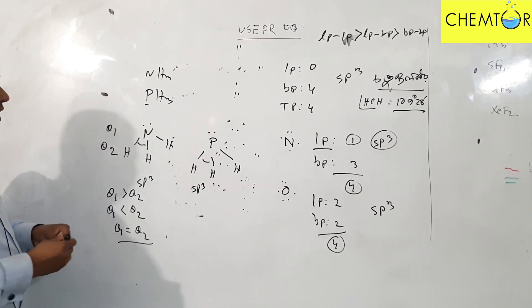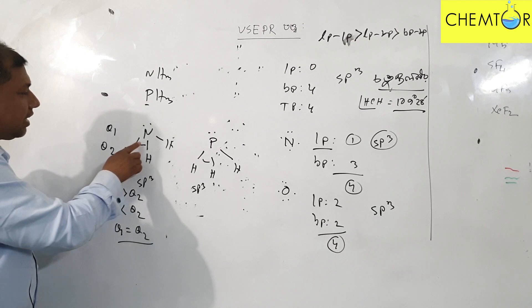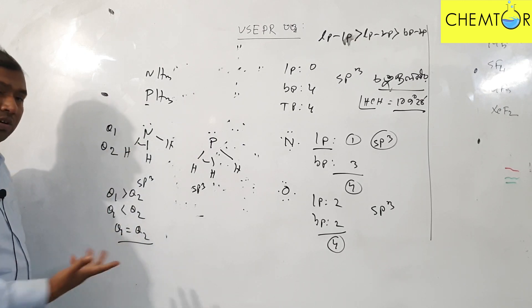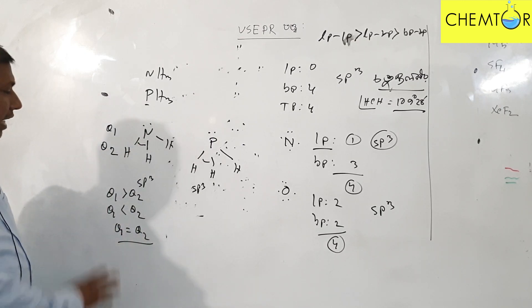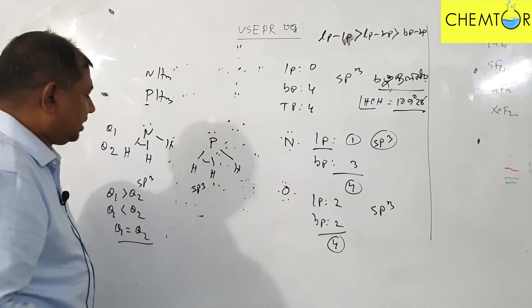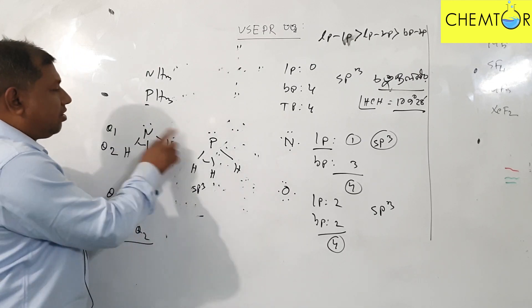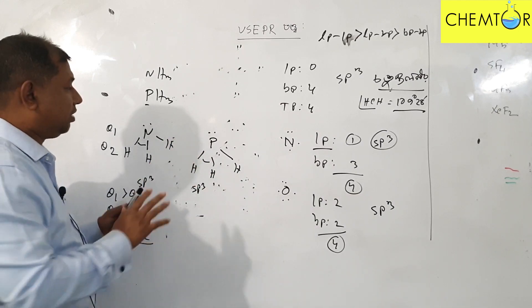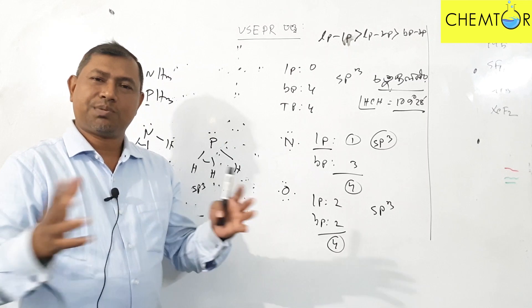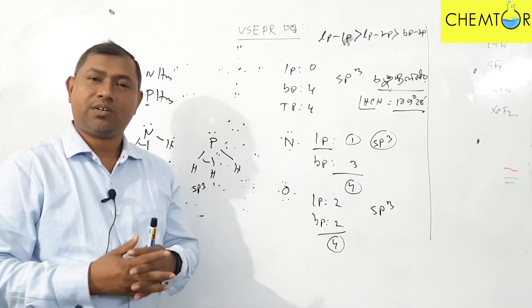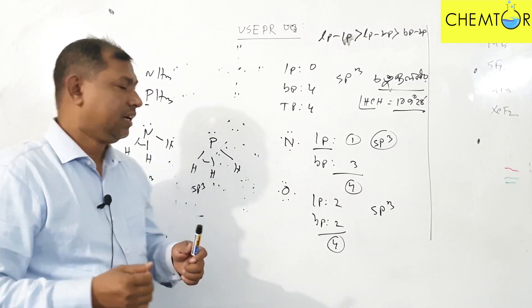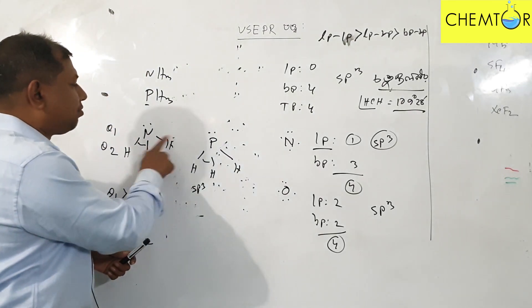Now we have to talk about what happens. The problem is that nitrogen is more electronegative than phosphorus. The lone pairs on nitrogen are less diffuse than on phosphorus. The nitrogen is smaller and the phosphorus is larger. So nitrogen is more electronegative than phosphorus.